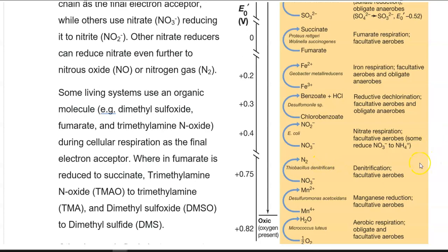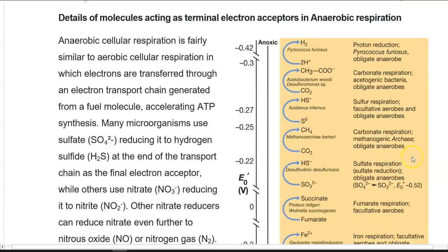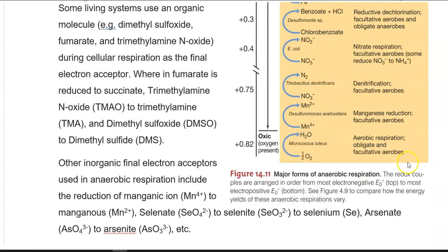On the right-hand side, you can see the different possible anaerobic respiration reactions occurring in natural systems. Other inorganic final electron acceptors used in anaerobic respiration include manganic ion, which is reduced to manganous; selenate, which can be reduced to selenite and further to selenium; and arsenate, which may also be reduced. These are additional molecules that can serve as terminal electron acceptors in anaerobic respiration.